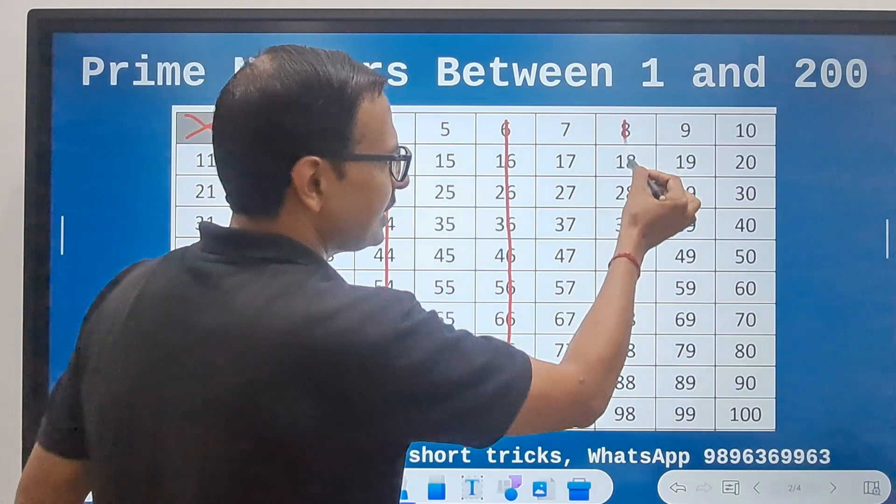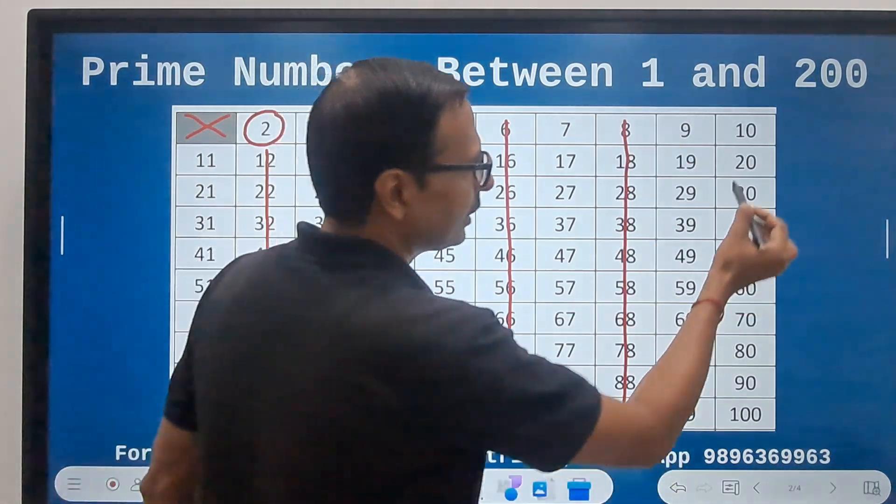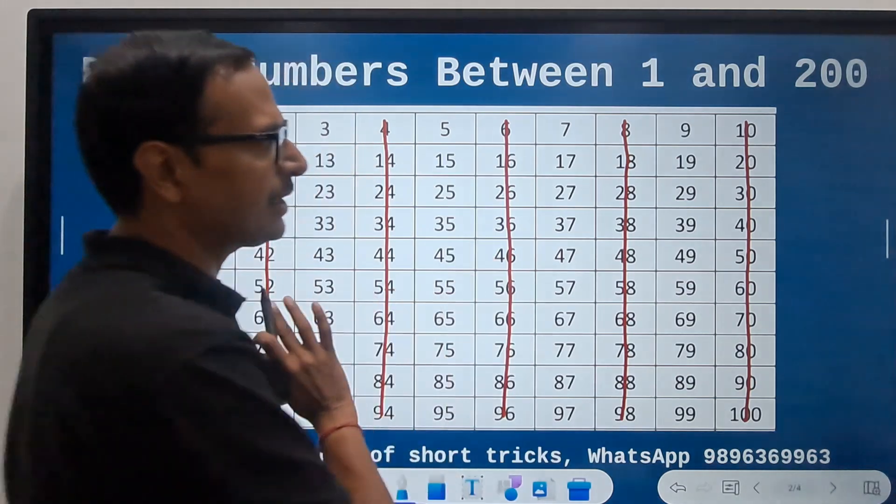So I am ruling out all the even numbers here. So all these are gone.